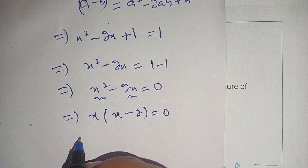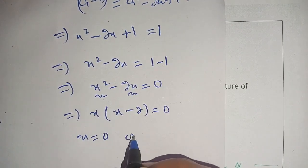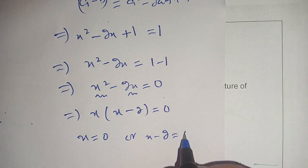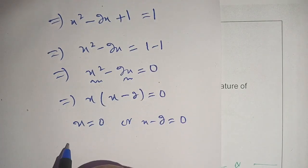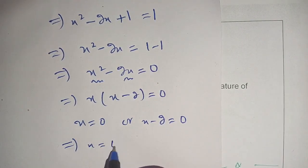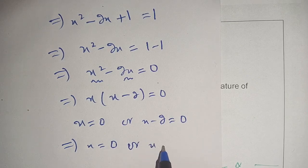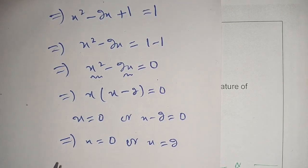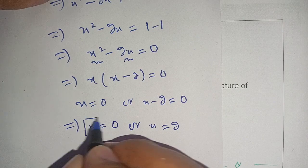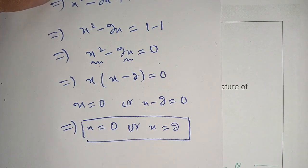Thus either x is equal to 0 or x minus 2 is equal to 0. Therefore the value of x is equal to 0 or x is equal to 2.